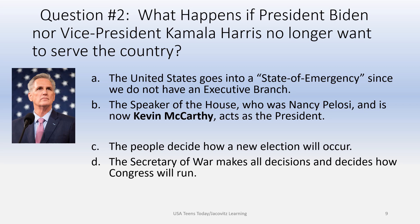Question number two: what happens if President Biden nor Vice President Kamala Harris can no longer serve the country? Choice A — it goes into a state of emergency. That's not the answer. Choice B — the Speaker of the House becomes acting president. Your answer is B. Choice C — we get to go back to an election and elect somebody. The United States Congress figured that was too much work. Choice D is an absurd question trying to confuse you, saying the Secretary of War would come in and decide. The choice here is B.